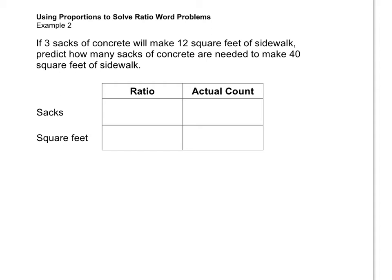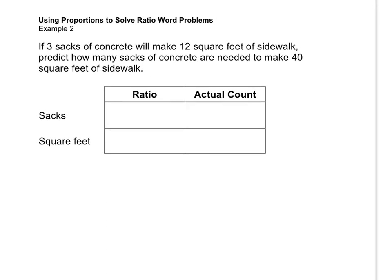Let's read our next example. If 3 sacks of concrete will make 12 square feet of sidewalk, predict how many sacks of concrete are needed to make 40 square feet of sidewalk. So let's fill in our ratio box here. The ratio numbers are 3 to 12: 3 sacks will make 12 square feet of sidewalk. And the problem says we want to make 40 square feet of sidewalk, and we're to predict how many sacks. So that's the unknown, we'll call that n.